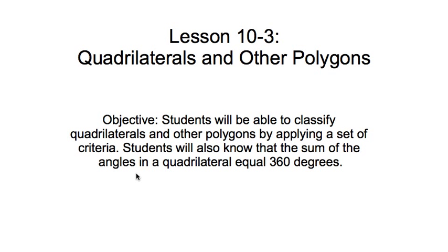The next thing we're going to cover is that the sum of the angles in a quadrilateral equals 360 degrees. There's no way of you knowing that from fourth grade — this is a new thing — but it's true that the angles of a quadrilateral add up to 360. If we took one of the angles away, would you be able to figure it out using algebra? That's going to be part of the lesson today.